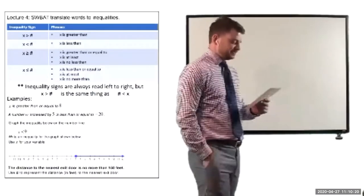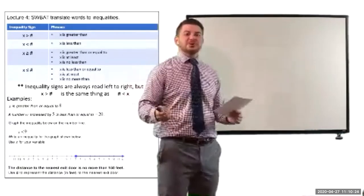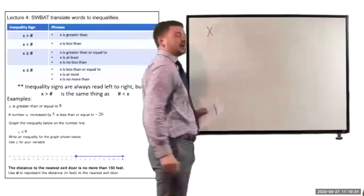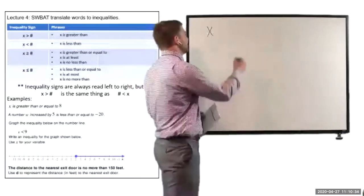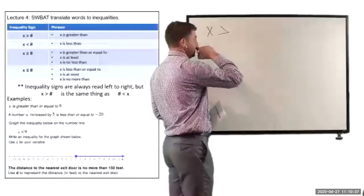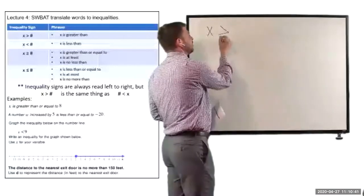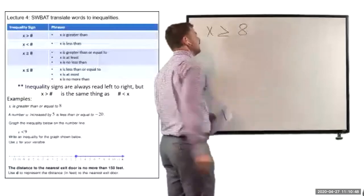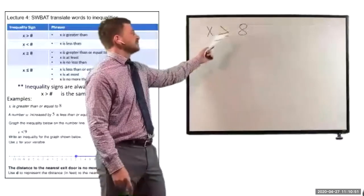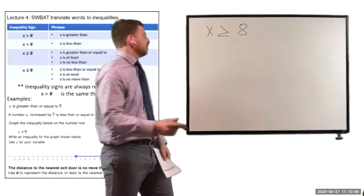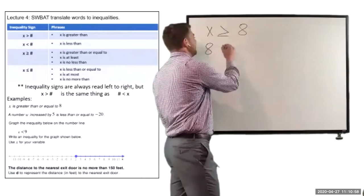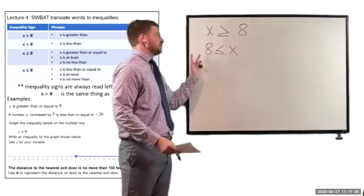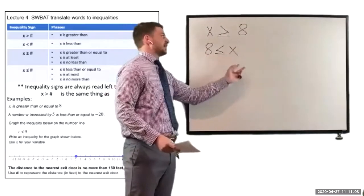Our first example says x is greater than or equal to 8. Remember, we always read from left to right. So, if it's saying x is first, we start with x, and then greater than or equal to — it's always opening towards the side that's greater, so the alligator wants to eat the bigger side. The line underneath tells us it's greater than or equal to 8. An equivalent expression would be 8 is less than or equal to x. These are the exact same thing.